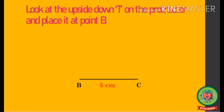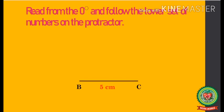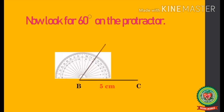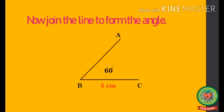Look at the upside down T on the protractor and place it at point B. Start reading from zero degree and follow the lower set or the inner set of numbers on the protractor. Look for 60 degrees on the protractor in this way. Now join the line to form the angle. As you can see, we have constructed angle ABC as 60 degrees.